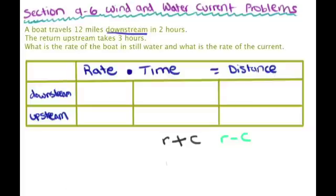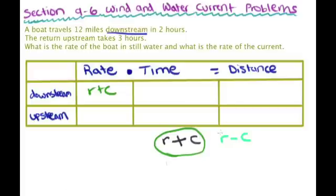So what is the speed going downstream? Well, we just talked about that — it's r plus c. So r plus c is going to be the rate going downstream, and r minus c is going to be the rate going upstream.